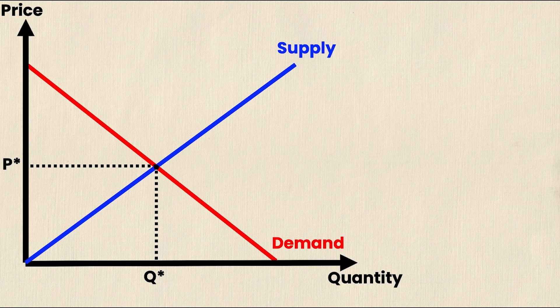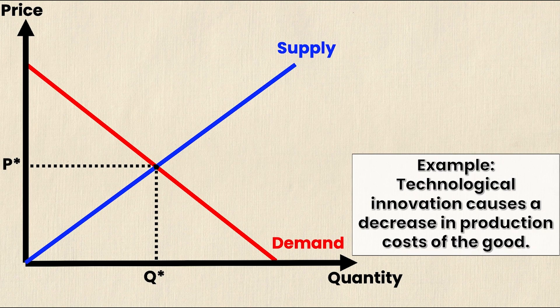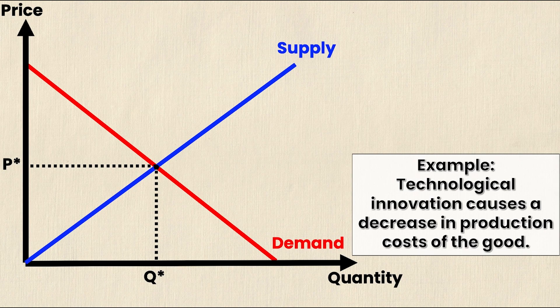Now let's take a look at a supply shock. One example is technological innovation causes a decrease in the production costs of a good. Now we know that production costs or the cost of factors of production is a supply curve shift factor. In this case it's making the cost of production cheaper which means I'm going to supply more goods because I can afford to make more goods.